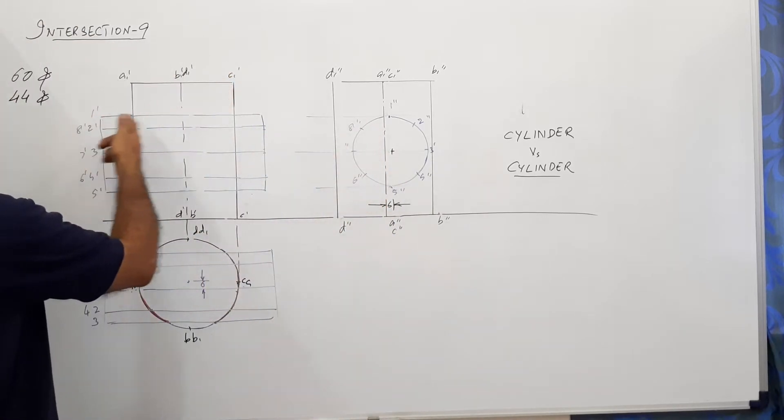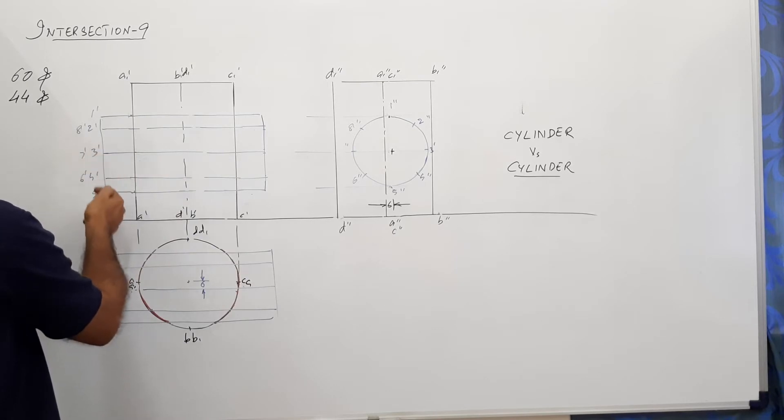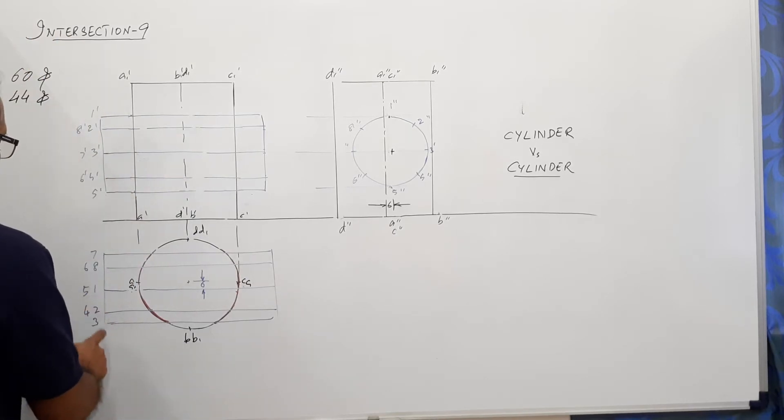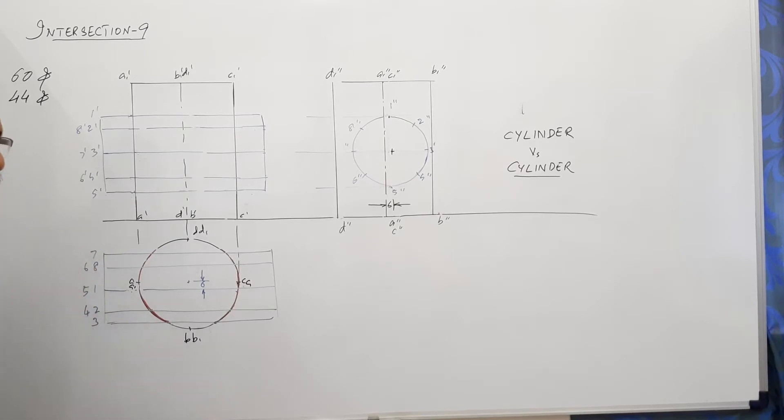And mark them in the elevation. 1 dash, 2 dash, 3 dash, 4 dash, 5 dash, 6 dash, 7 dash, 8 dash. Mark them also in the plan. 1, 2, 3, 4, 5, 6, 7, 8.